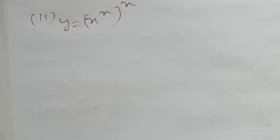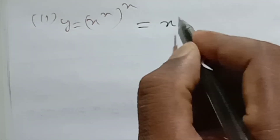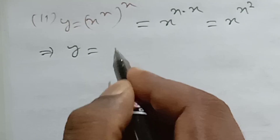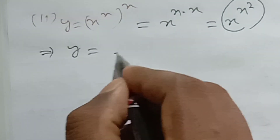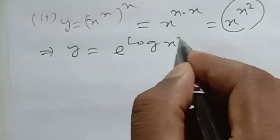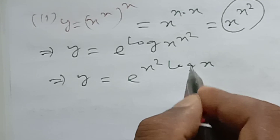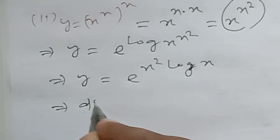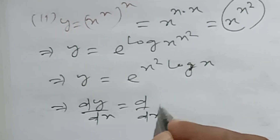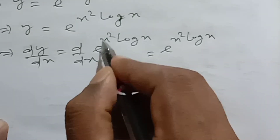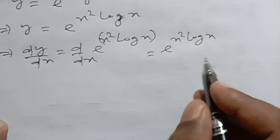The second question: y = (x^x)^x. This can be written as x^(x · x) = x^(x²). This is a huge difference from the previous case. Using x = e^(log x), we write y = e^(x² · log x). Differentiating both sides: dy/dx = e^(x² · log x) times the derivative of x² · log x.